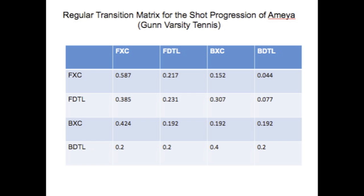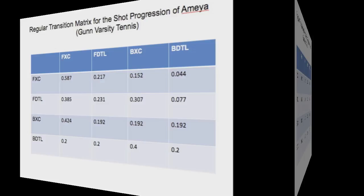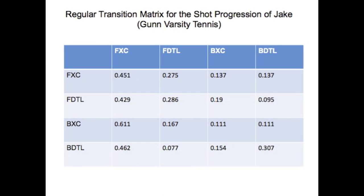Also note the low values in the fourth column, which signify that not many backhands down the line were hit. Here is the transition matrix for Jake. As you can see, the values in column 1 are a lot higher than the others, and values in column 4 are much lower than the others. This shows an abundance of cross-court forehands being hit and a dearth of down the line backhands.